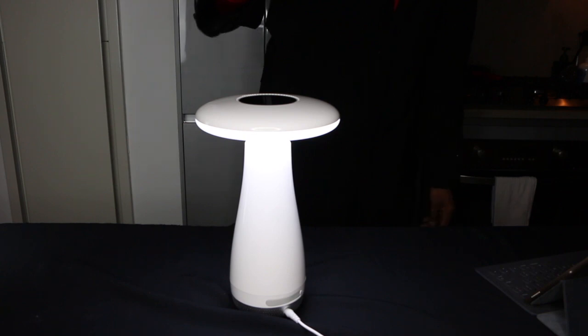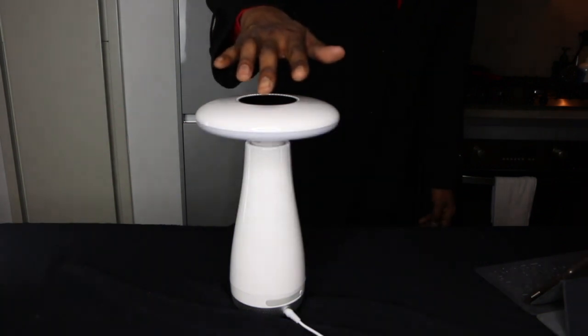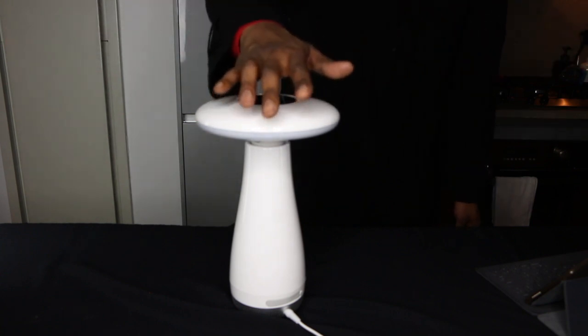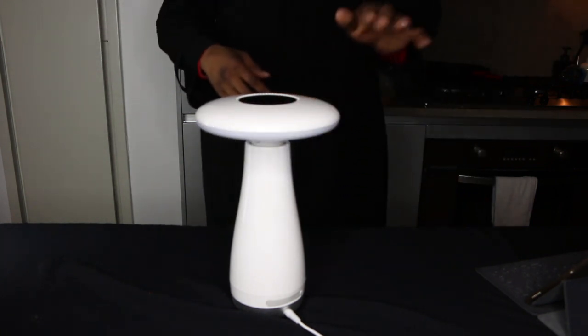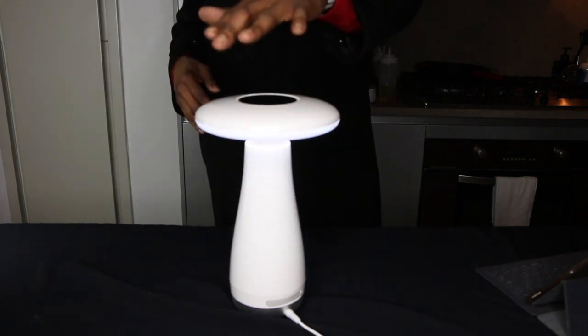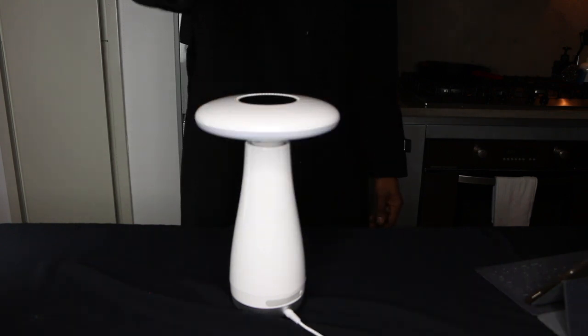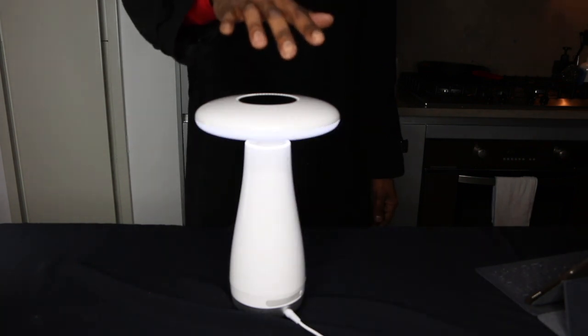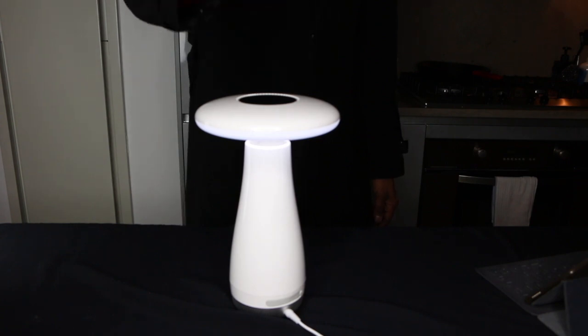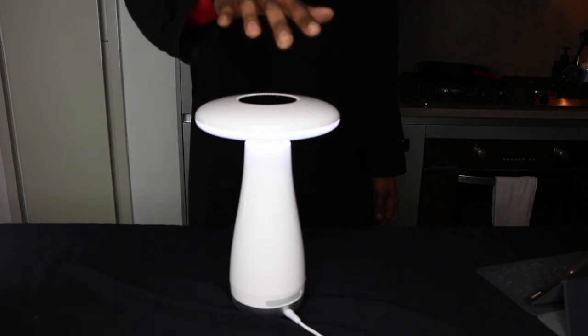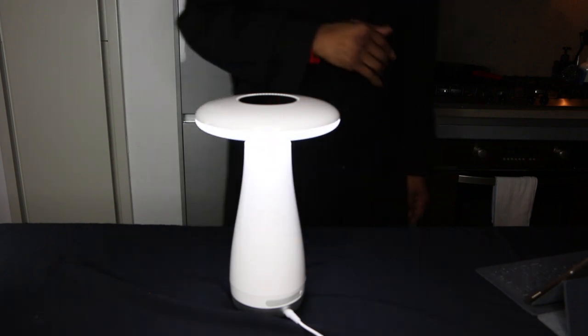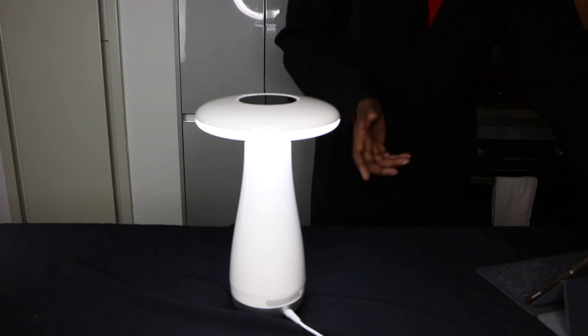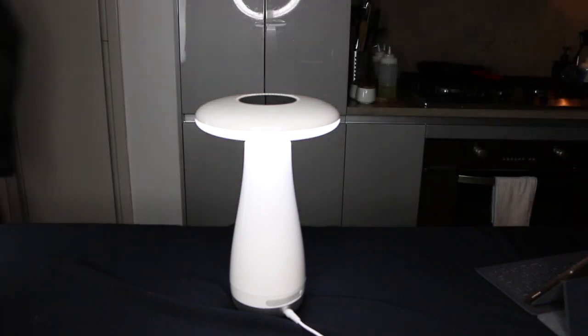If I do this. Off. On. That's how you turn it off. Wow. Cool. If you notice, the higher I go up, the brighter, the lower. Pretty cool. So, it's gesture control. You can see that it's not so bright. Let me turn off the other light so you can see.